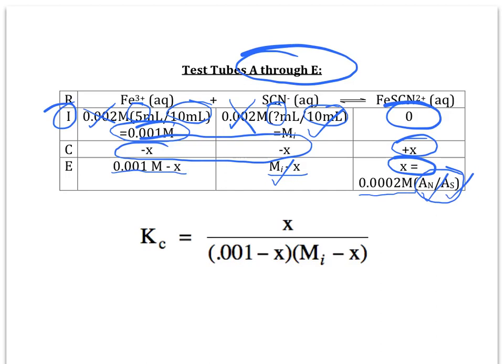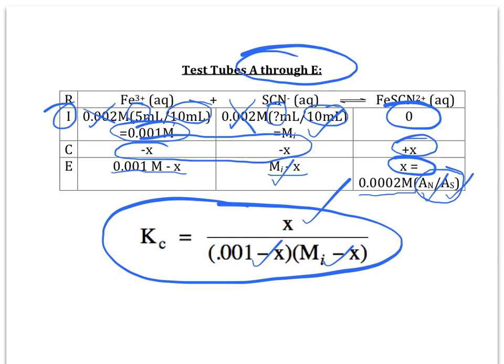So, 0.0002 molar times that ratio gives you the value of X. So, even though this RICE chart looks like it's got a bunch of different variables on it, we actually, by the end, will know all of those. And we can come down here and figure out the value of Kc by doing our usual Kc expression: products FeSCN2+ at equilibrium over reactants Fe3+ and SCN-, they're all raised to the first power because the coefficients are all one. So, do that for each of the test tubes. Get a value of Kc and take an average of your five values and that's what you're going to report.